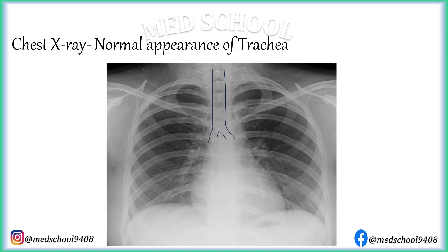Trachea is visible as a radiolucent structure just behind the spinous processes. It is midline in position, but sometimes with slight deviation to the right. Trachea can be pulled to the same side by pathologies like fibrosis or collapse, or pushed to the opposite side in pathologies like pleural effusion or pneumothorax. Luminal narrowing in the trachea or a foreign body in the trachea can be appreciated on chest X-ray.